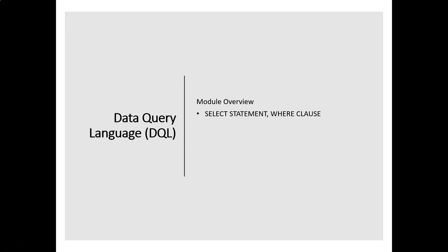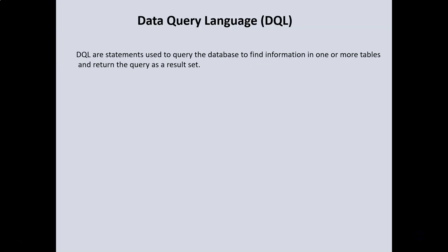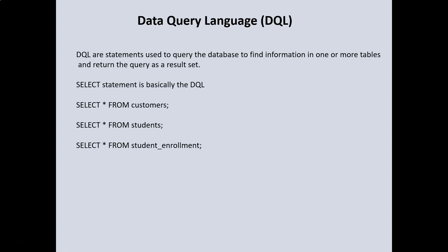In this section, we would look at commands grouped under data query language and the different ways we can use those commands. Data query language, or DQL, are statements used to query the database to find information in one or more tables and return the query as a result set. The main SQL command within DQL is the SELECT statement, and we're quite familiar with this — SELECT * FROM CUSTOMERS or SELECT * FROM STUDENT prints out all the data within the table. That's us performing a data query language command, which is the SELECT statement.